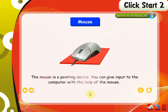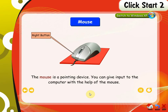Mouse. The mouse is a pointing device. You can give input to the computer with the help of the mouse. The various parts of the mouse are: Left Button, Right Button, and Scroll Wheel.